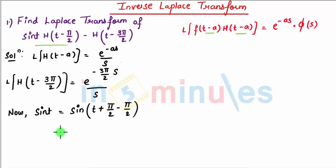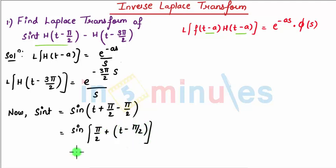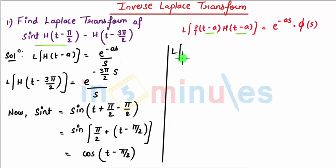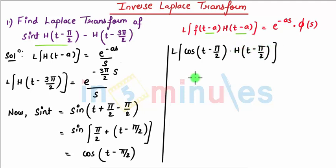We rewrite sin(t) as sin((t - π/2) + π/2), which equals cos(t - π/2). So the term becomes the Laplace of cos(t - π/2) * h(t - π/2), which fits the standard form e^(-as) * Φ(s) with a = π/2.